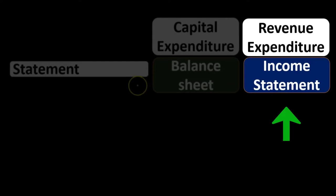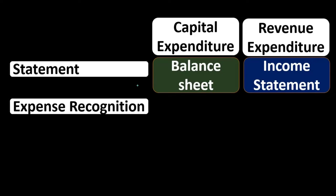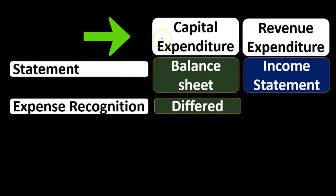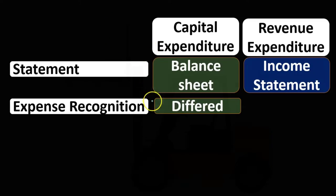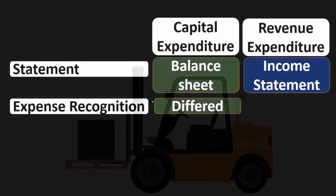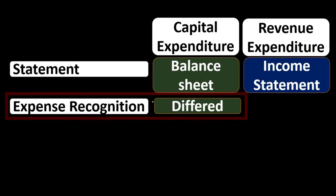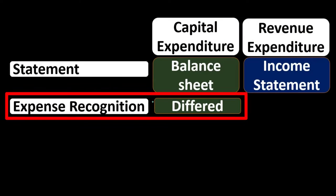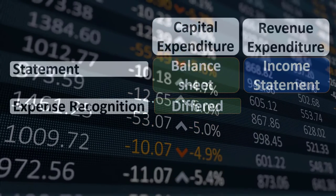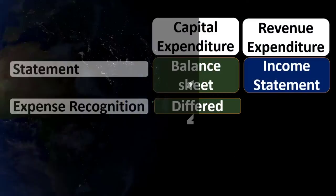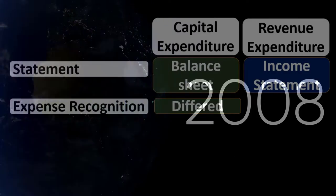Expense recognition is deferred if we're talking about a capital expenditure, meaning we're not going to write off the expense at the point in time we have the expenditure. If we put a whole new engine into the forklift, we put it on the books as an asset — as we did with the forklift itself — and then depreciate it over its useful life. That means we defer the expense and we're not going to lower net income in year one; it will lower net income in later years.